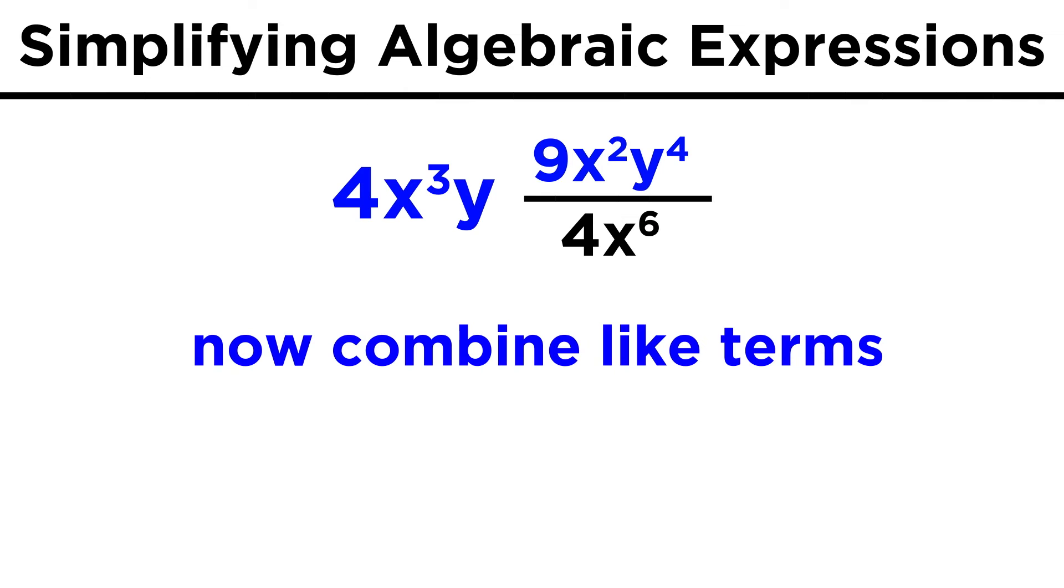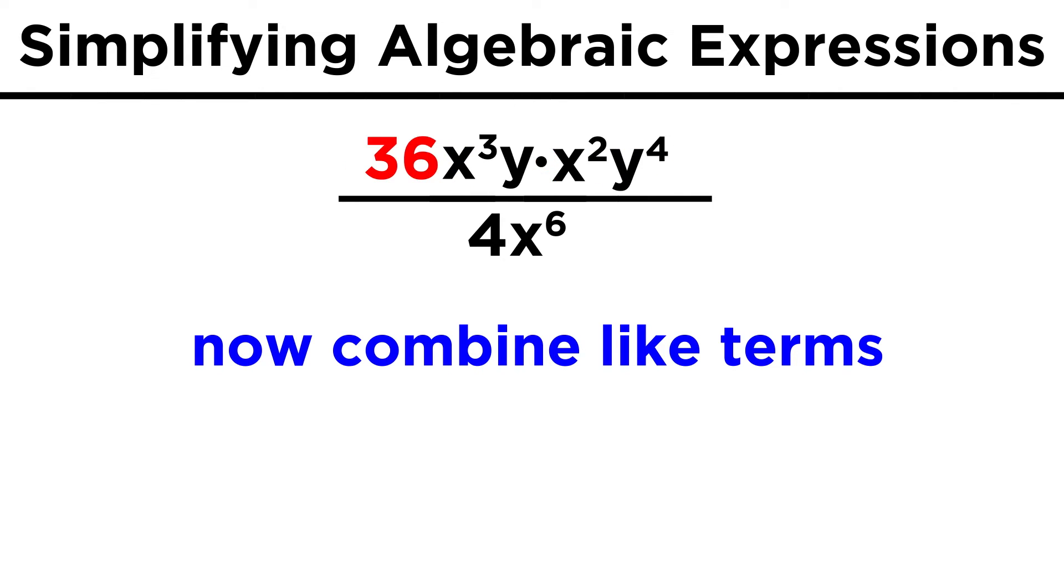Now we can combine like terms for this term on the left and the numerator of this fraction. Remember that when multiplying a fraction by a number, the number only multiplies the numerator, and this is no different. Four times nine is thirty-six, x cubed times x squared is x to the fifth, and y times y to the fourth is y to the fifth.